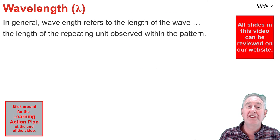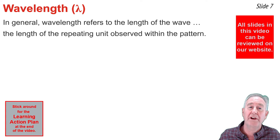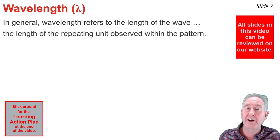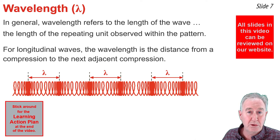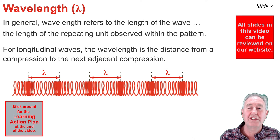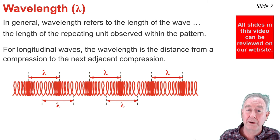In general, wavelength is the length of a wave — the length of the repeating unit observed within the wave pattern. We typically think of it as the distance from crest to crest or trough to trough. But longitudinal waves, like a sound wave moving through air, don't have crests and troughs; instead they have compressions and rarefactions. Here we see a diagram of a longitudinal wave moving through a slinky. The wavelength can be thought of as the distance from one compression to the next adjacent compression, or equally, the distance from one rarefaction to the next adjacent rarefaction.